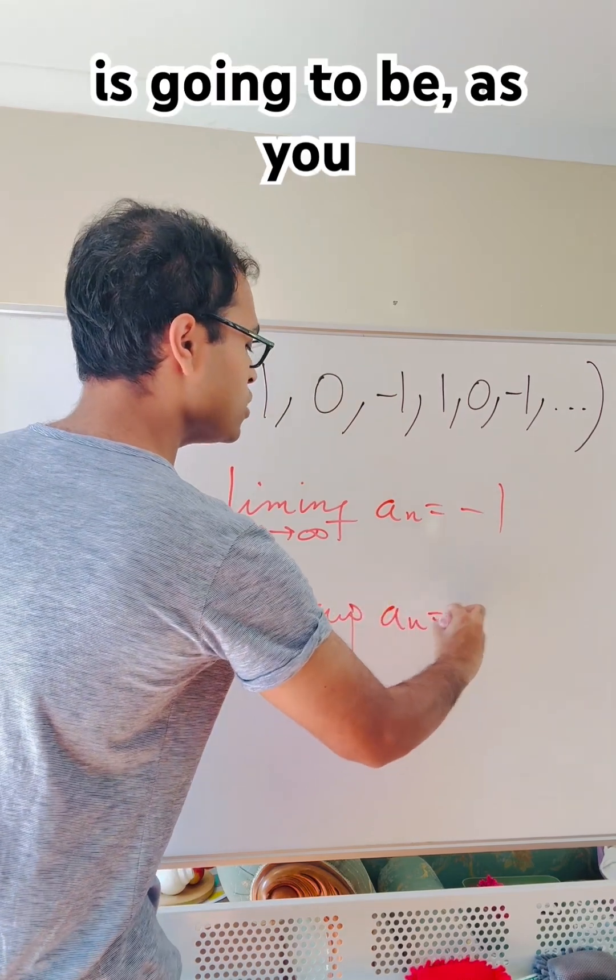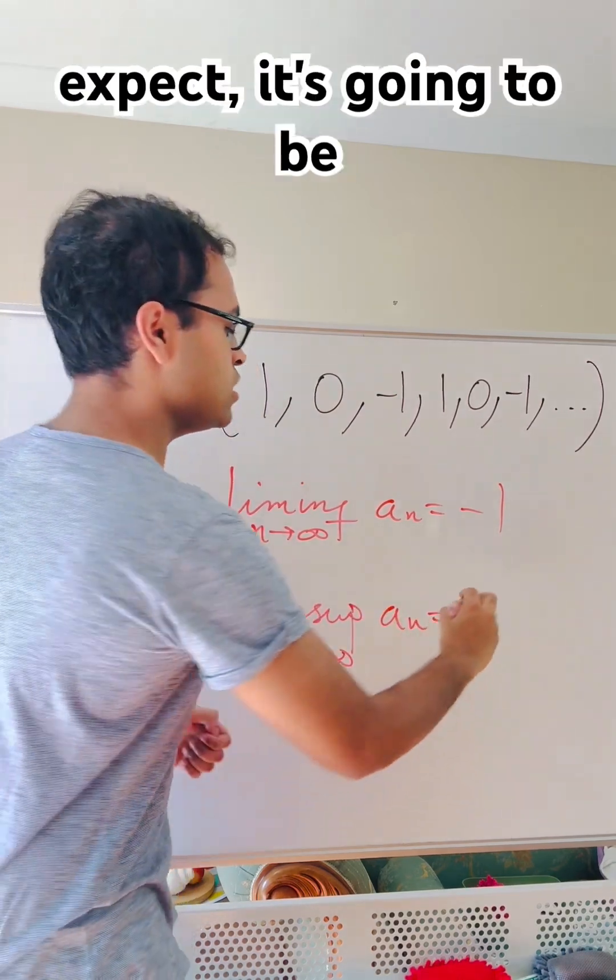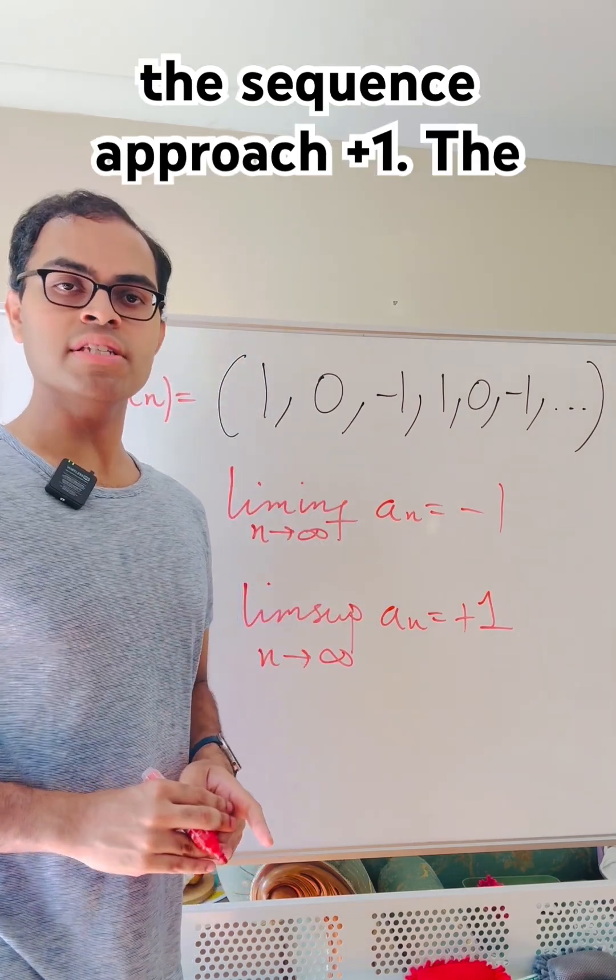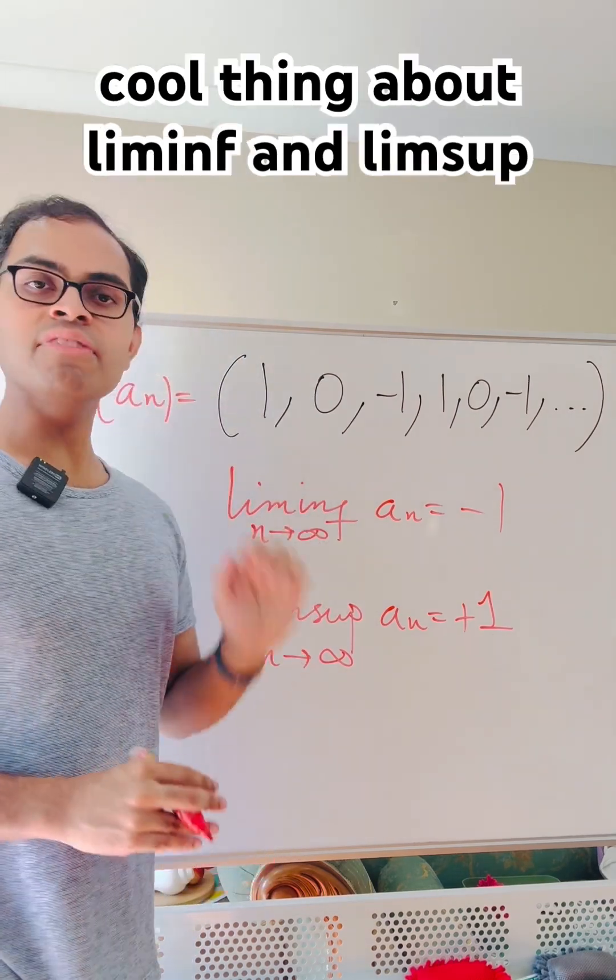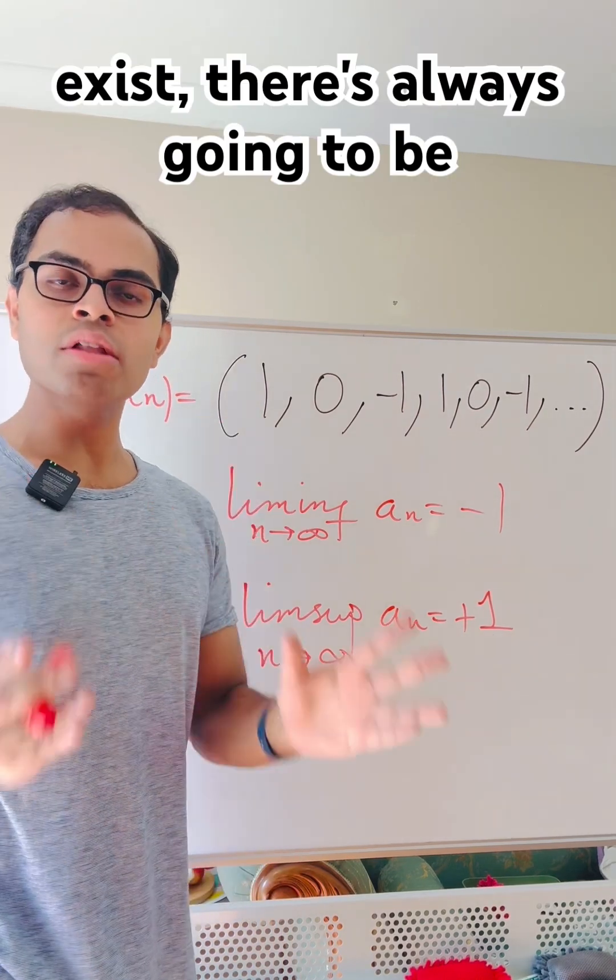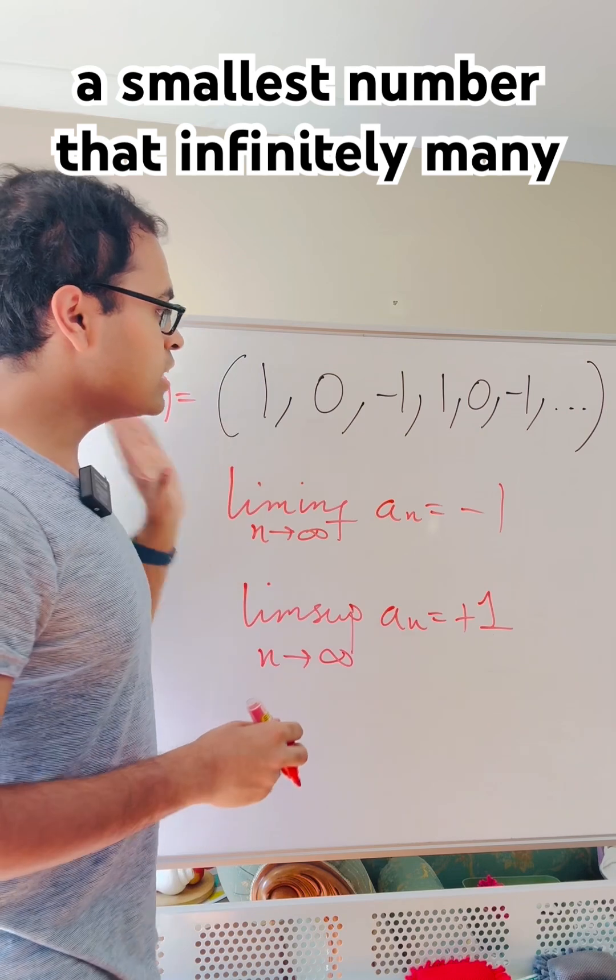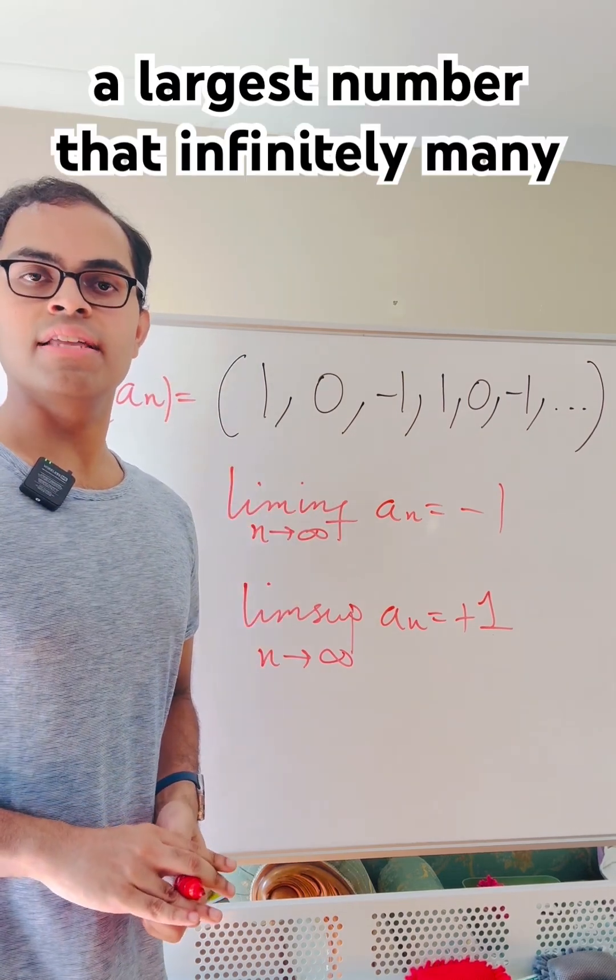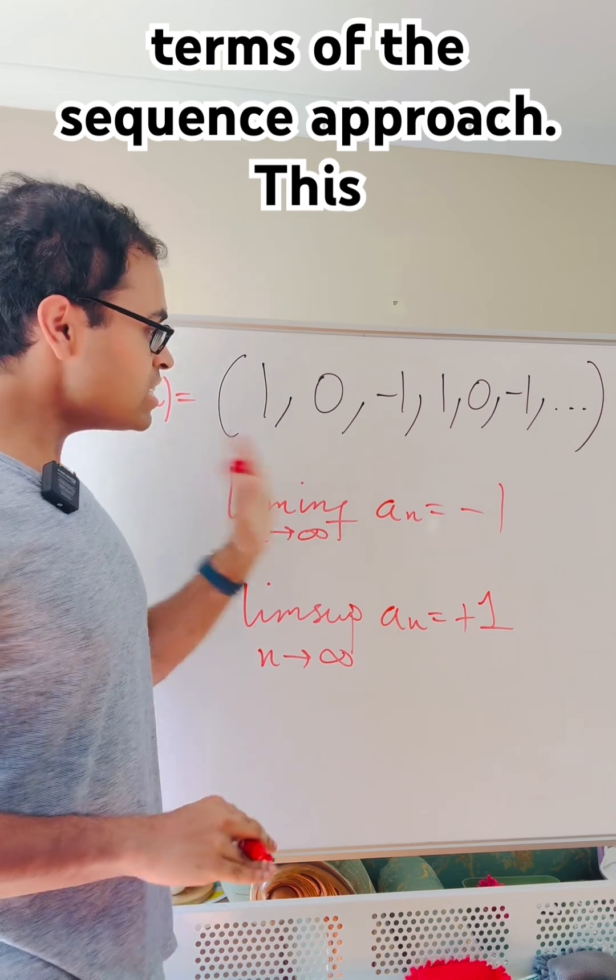And lim-sup of a_n is going to be, as you expect, positive one because infinitely many terms of the sequence approach positive one. The cool thing about lim-inf and lim-sup is they exist for every sequence even when the limit doesn't exist. There's always going to be a smallest number that infinitely many terms of the sequence approach and a largest number that infinitely many terms of the sequence approach.